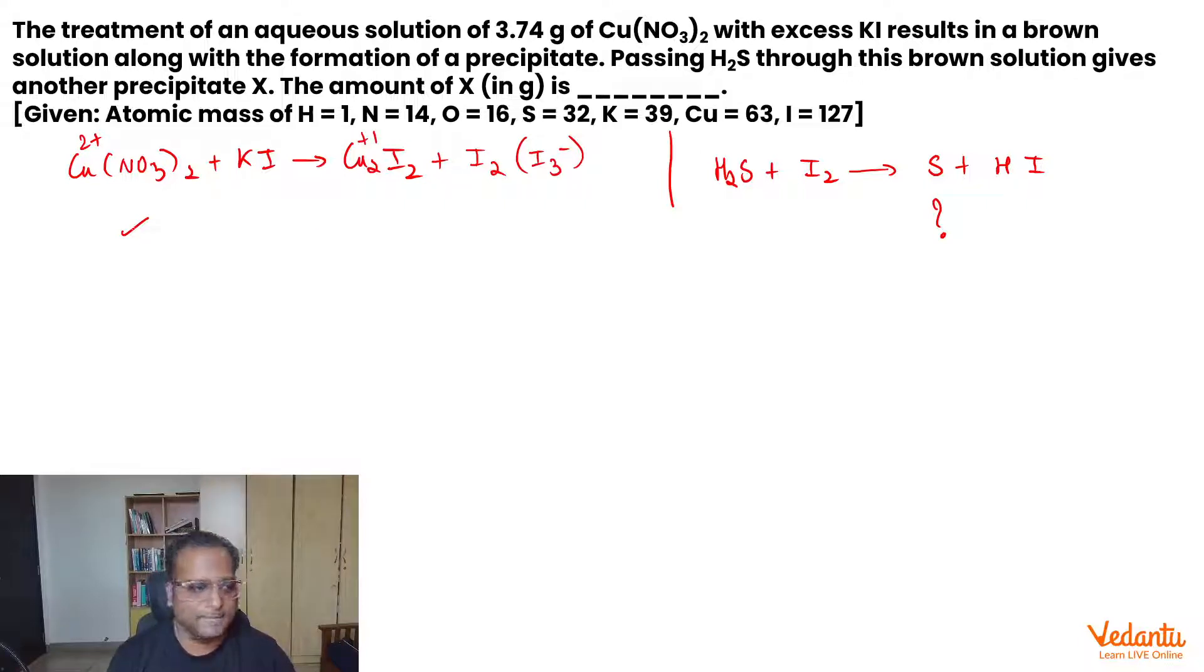So if we talk about this system, what is the n-factor for Copper 2+? The n-factor for Copper 2+ would be 1, because Copper 2+ converts to Copper +1.